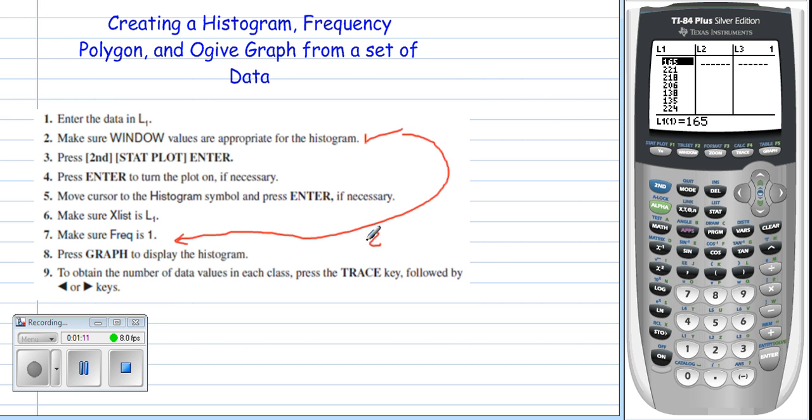And when we do that, we're actually going to use the zoom key. We're going to press zoom, and then once inside the zoom, we will then press number nine, zoom stat. So we'll come back to that in a minute. So let's go back up to number two, where we said we're going to skip that step.